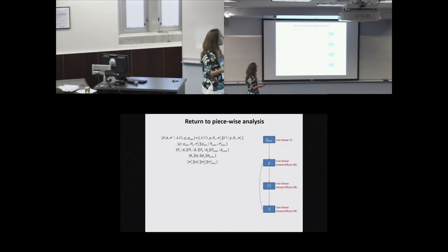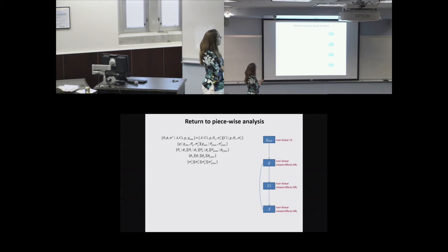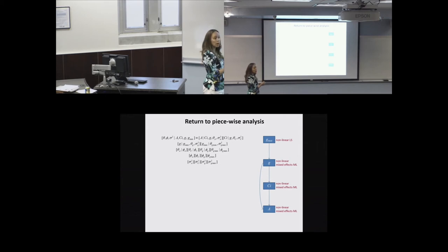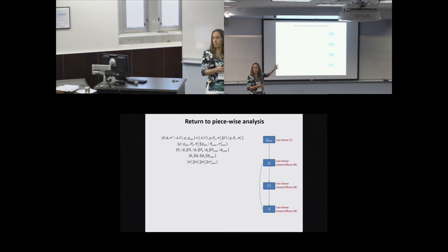Coming back to my PhD example — I could have done this as a simultaneous analysis using the Bayesian framework. I would write out my posterior for all parameters related to photosynthesis, CI, conductance, and maximum conductance given those observations, with a photosynthesis likelihood, a CI likelihood, a conductance likelihood, a maximum conductance likelihood, hierarchical priors for those processes, and root node population-level parameters or variance terms. At the time I didn't know about it, so I did it piecewise.